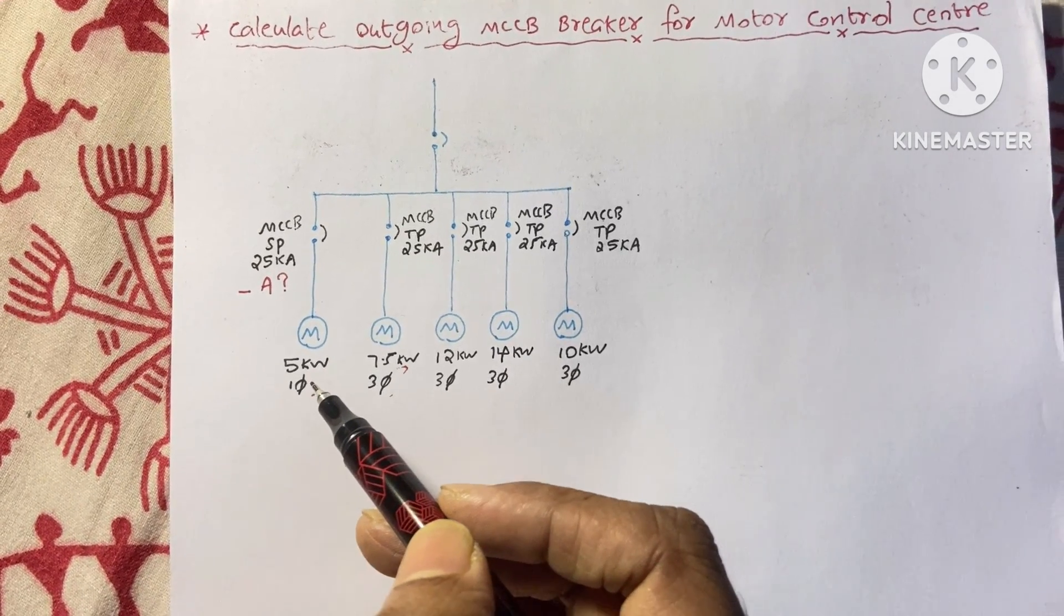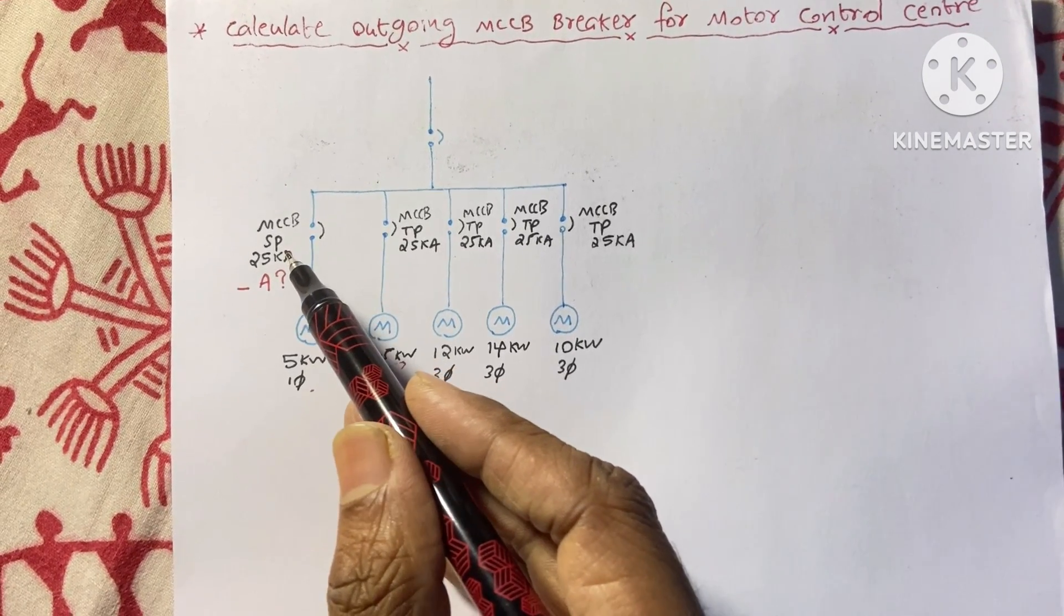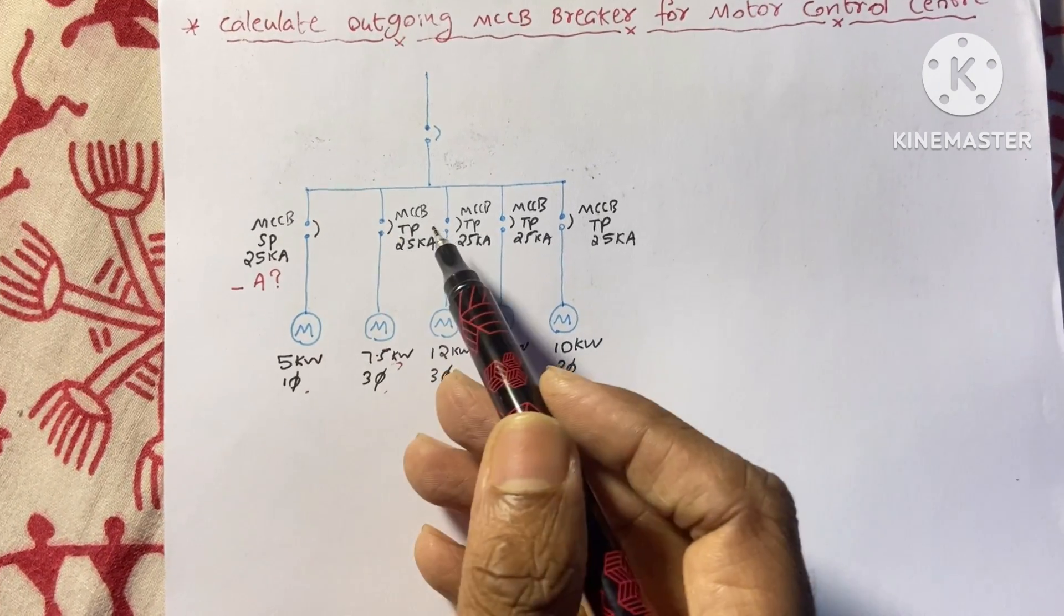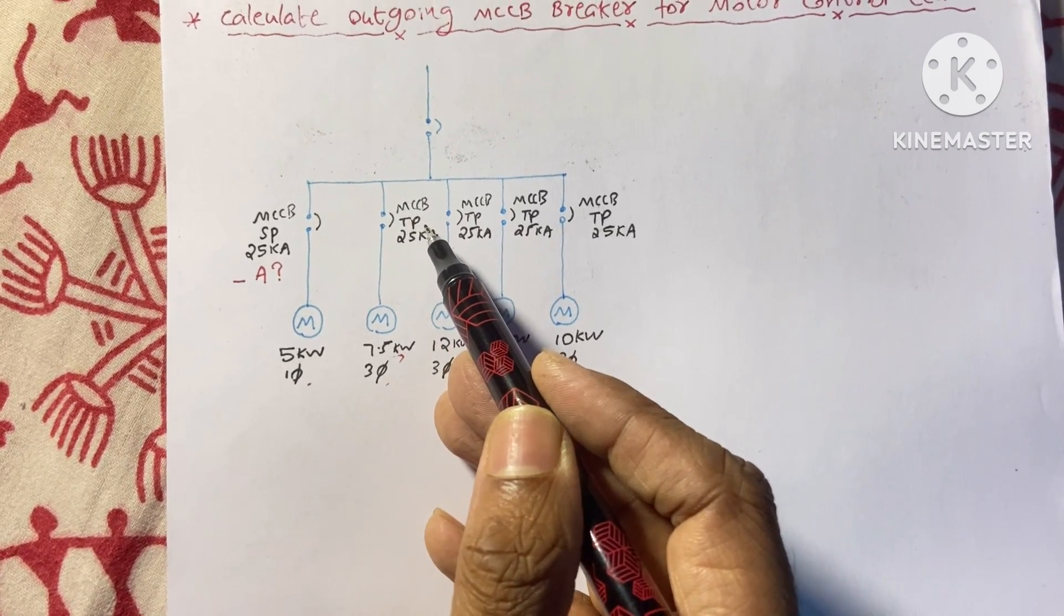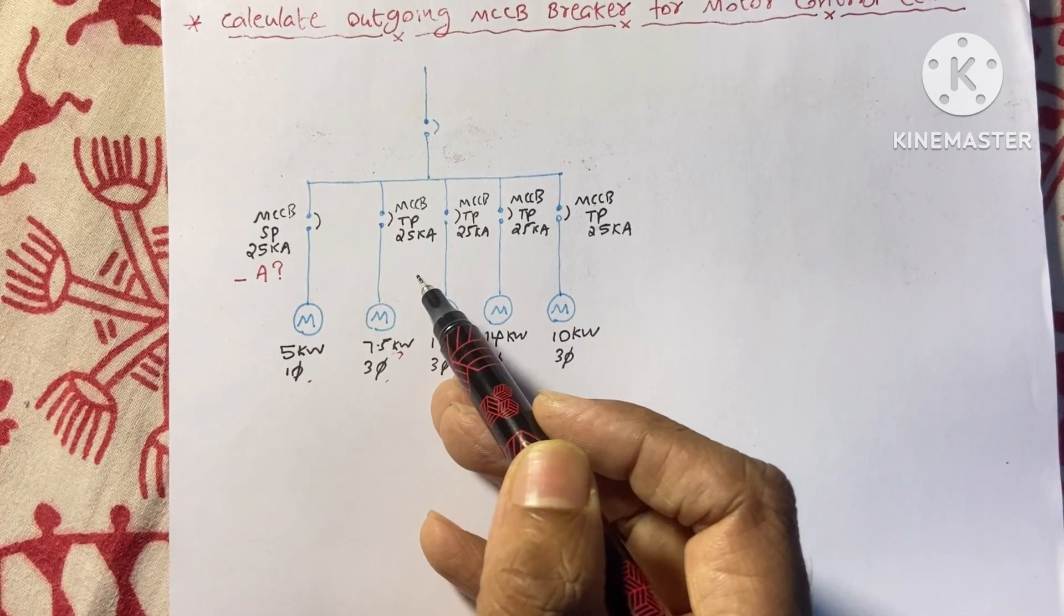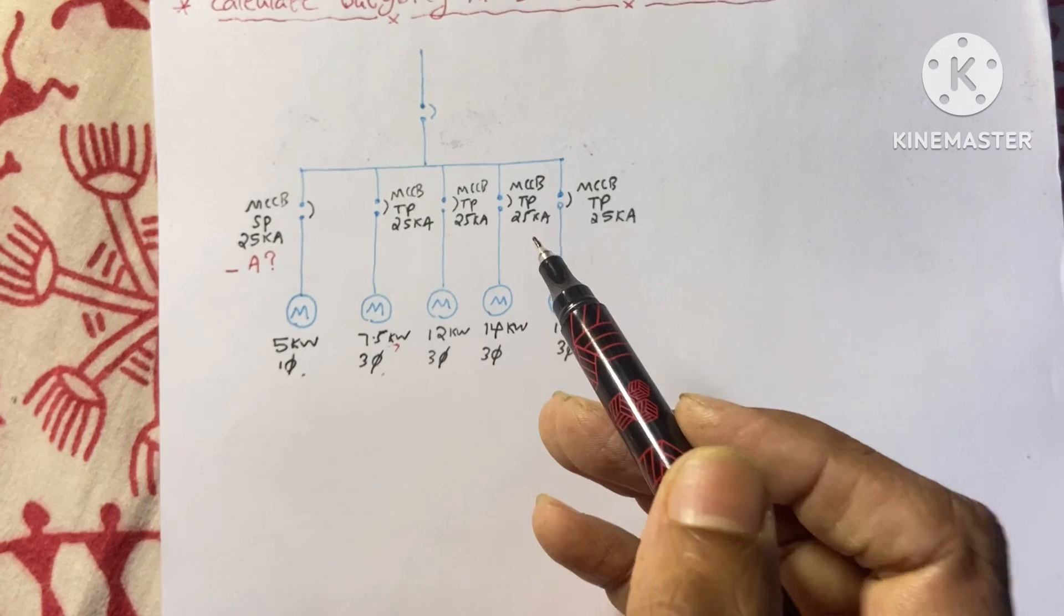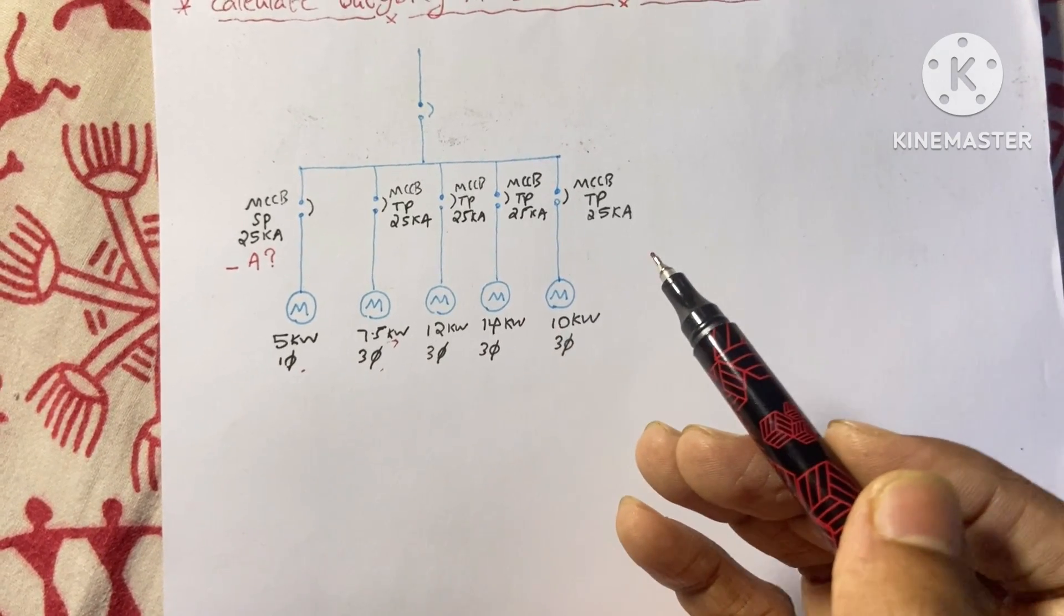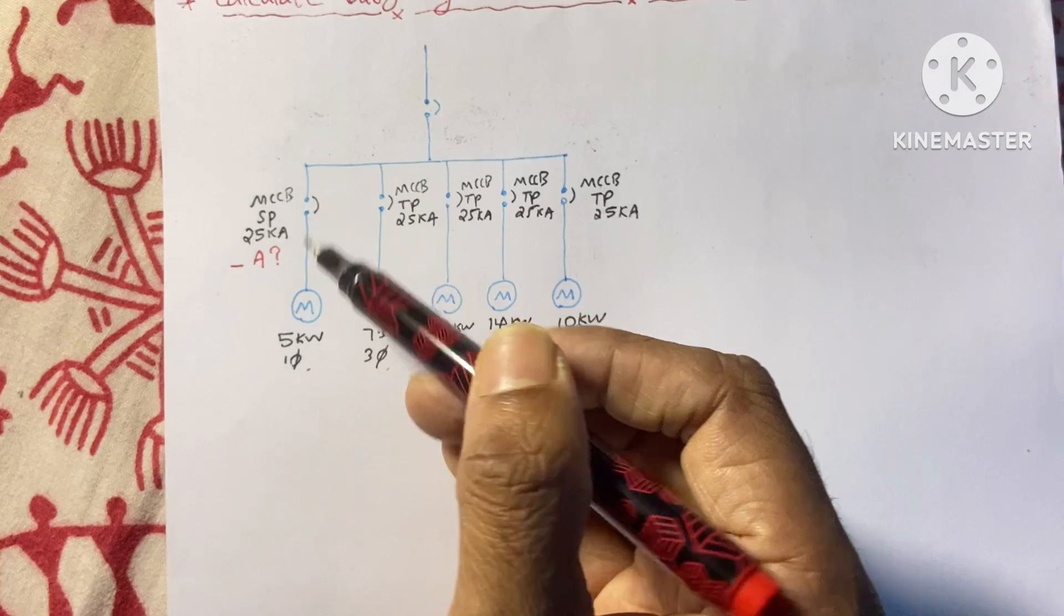The first motor is single phase motor so we use MCCB of single pole, but the other motors are three phase so we use TP. TP means three pole. Three pole is required to connect three phases. And generally for an MCC, that means motor control center, we use MCCB breaker for the outgoings.